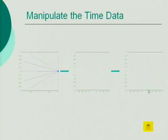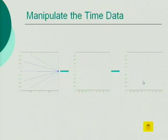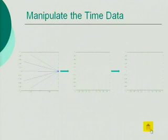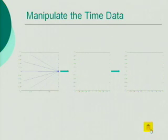Then we need to go one step further. We need to do interpolation in order to make each row of the matrix contain the time of those parallel paths that are evenly spaced for each specific angle. After we manipulate the data, we can get the sinogram.